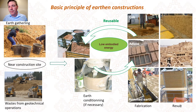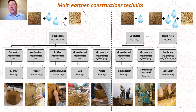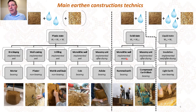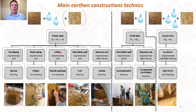There are several construction techniques. I can present the main families, which can be identified in function of the water content of the manufacture. If the water content is near the optimum water content, we can compact the earth to make a monolithic wall or a masonry unit. If the water content is between the plastic and the liquid limit, we can make masonry units like adobe, monolithic walls, infilling materials, plasters, and mortars. If the water content is higher than the liquid limit, we can make some insulation material.